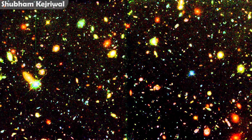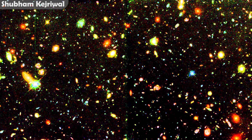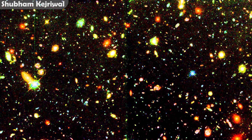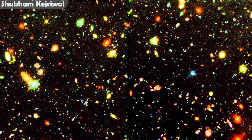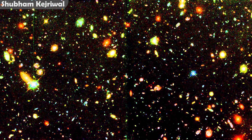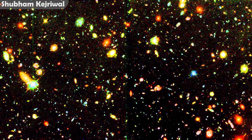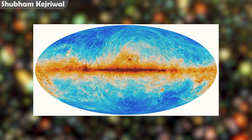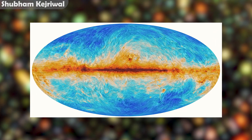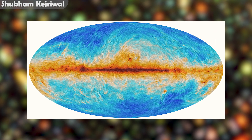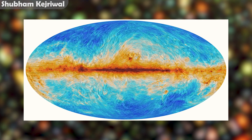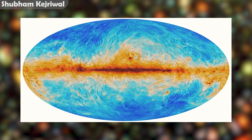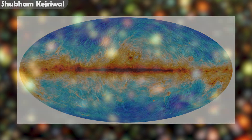Those are two of the most prominent pieces of evidence for the presence of a magnetic field in interstellar space. Additionally, the Planck satellite has already mapped the entire magnetic field of our galaxy as well as the surrounding galactic region.